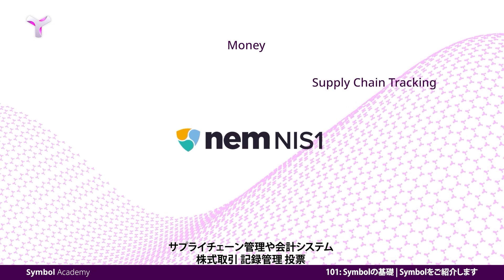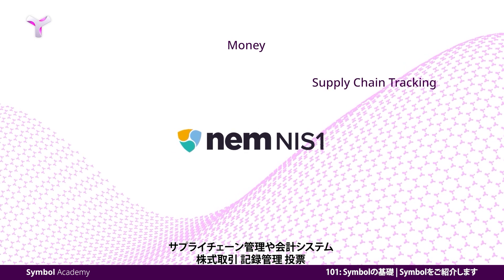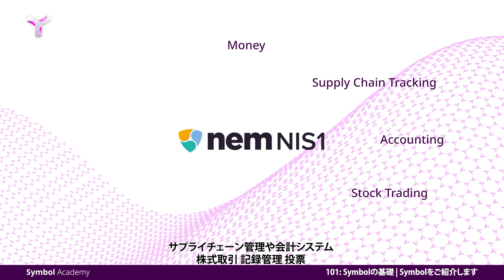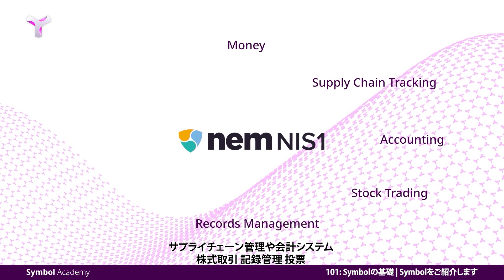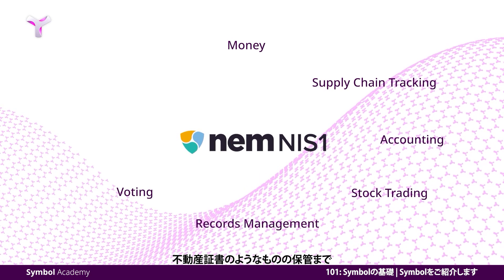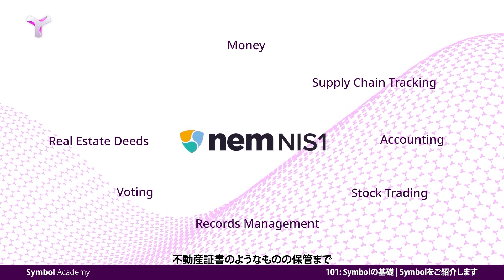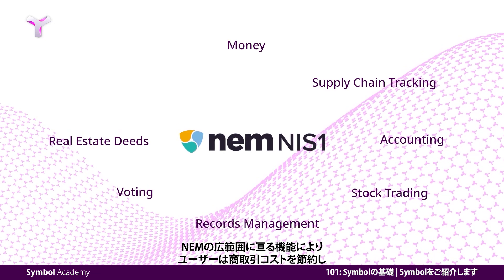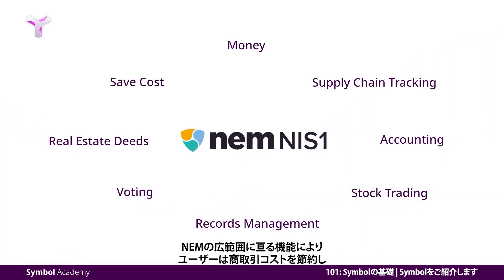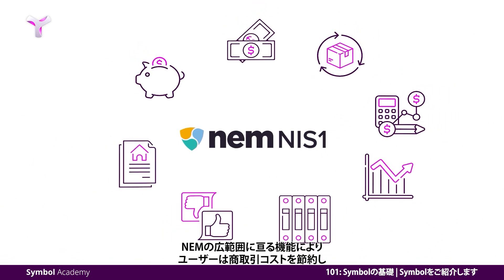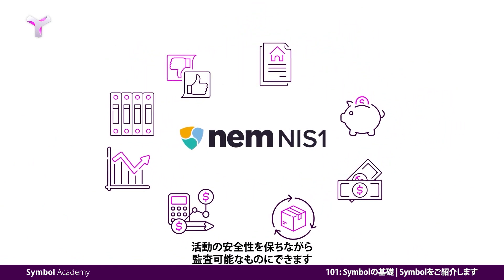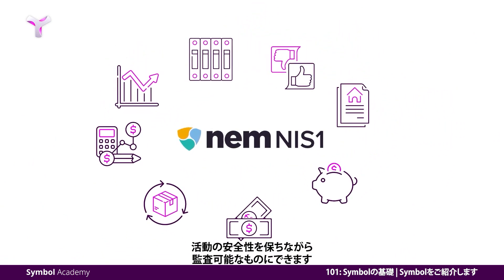NEM's success showed that blockchain technology can be used not only to transact money, but also for anything that needs representation of value — for example, supply chain tracking, accounting systems, stocks trading, records management, voting, and even to store unique items like real estate deeds. NEM's wide range of capabilities allowed users to save costs on their business transactions while keeping activities highly secure and auditable.